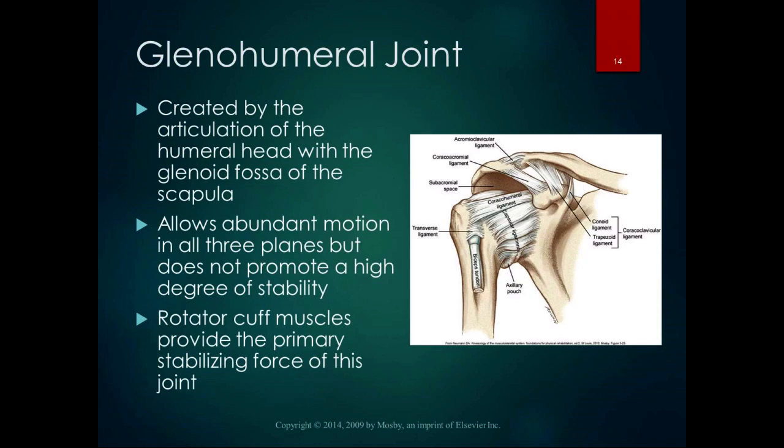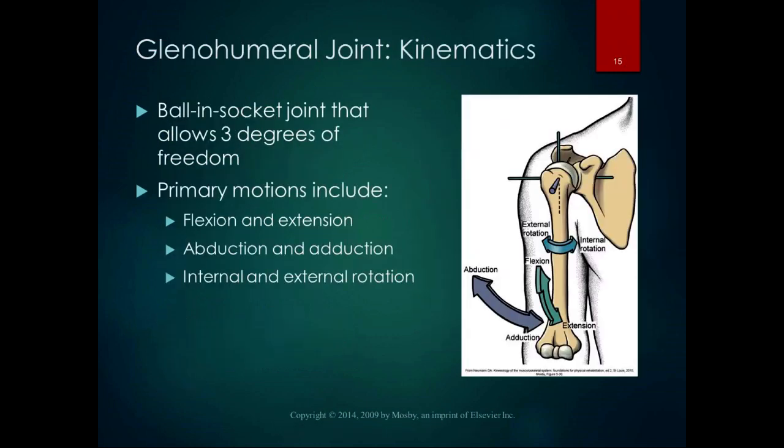The glenohumeral joint — or GH joint — is the one most of us think of as the shoulder joint. It's created by the articulation of the humeral head with the glenoid fossa of the scapula. It has tons of motion in all three planes but not a lot of stability. The rotator cuff muscles provide the primary stabilizing force, along with ligaments, the labrum, and the joint capsule. Its primary motions are flexion and extension in the sagittal plane, abduction and adduction in the frontal plane, and internal and external rotation in the transverse plane, plus horizontal abduction and adduction.